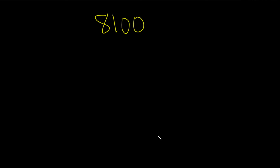Find the prime factorization of 8,100. The easiest way to do this would be to use a factor tree. So 8,100 is 81 times 100, and then we can just keep factoring these.